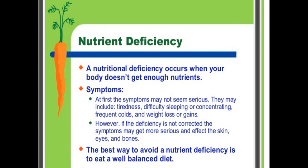Nutritional deficiency occurs when your body does not get enough nutrients. Nutrients include carbohydrates, protein, fat, vitamins, iron, and minerals. When these nutrients are lacking in our body, we get affected by non-communicable diseases.